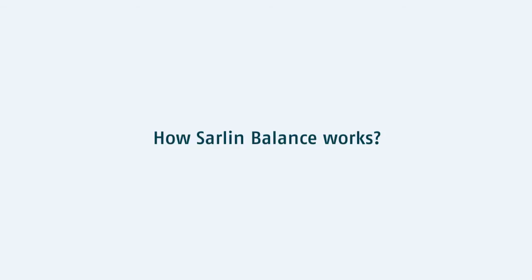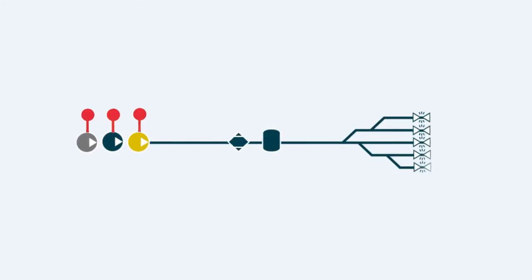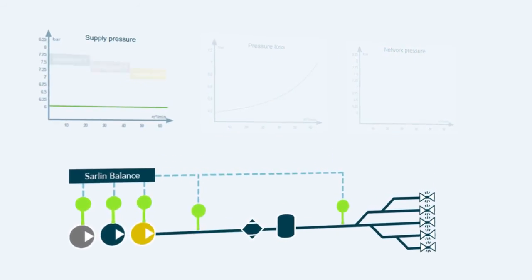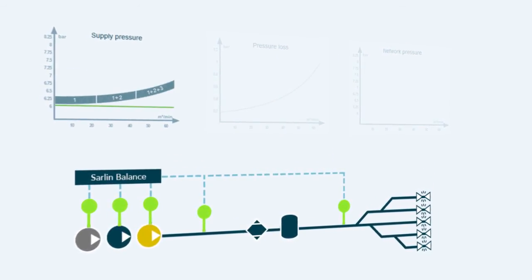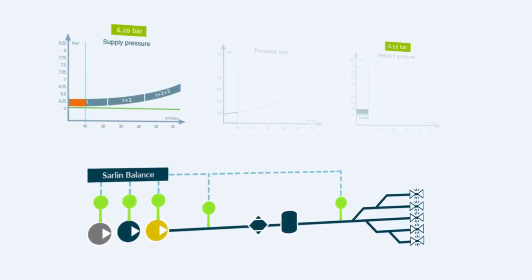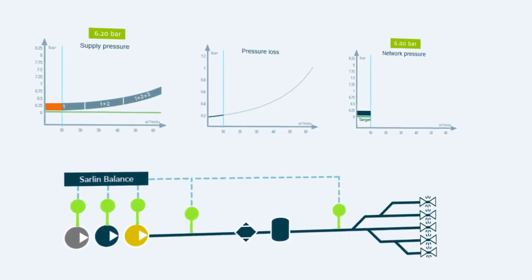How saline balance works? Saline balance measures the pressure in the compressor station, and in at least one point in the compressed air network. This means that the compressors no longer operate according to fixed limit values, but saline balance controls them continuously so that an optimum pressure level always prevails in the point of usage.